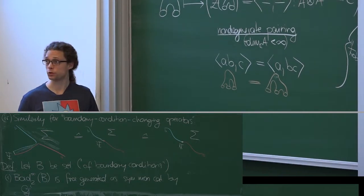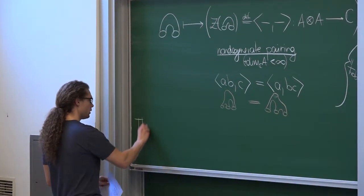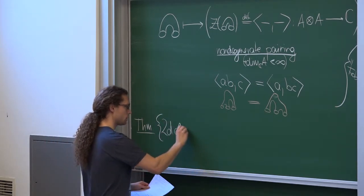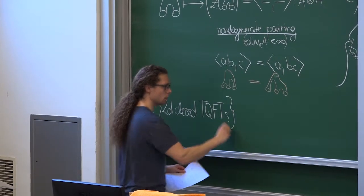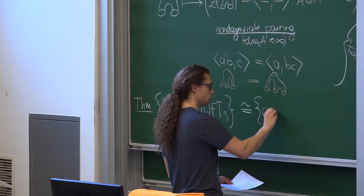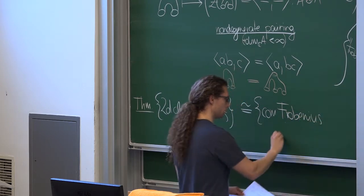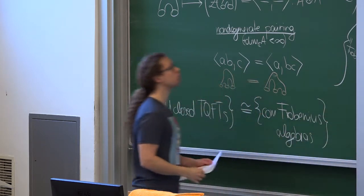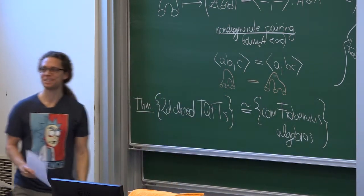And wonderfully, also the reverse is true. So they are really equivalent. So one can prove that two-dimensional closed TQFTs are equivalent to commutative Frobenius algebras over the complex numbers.